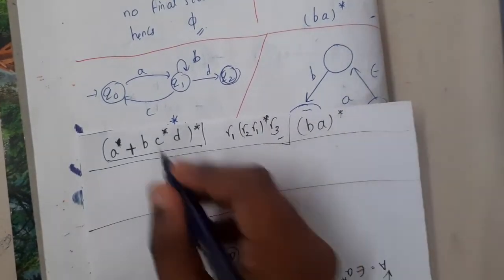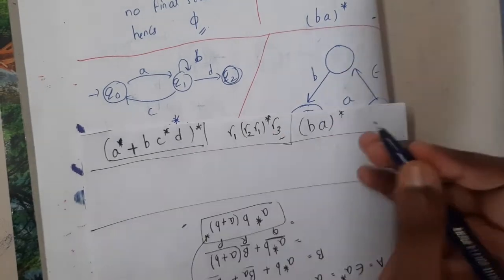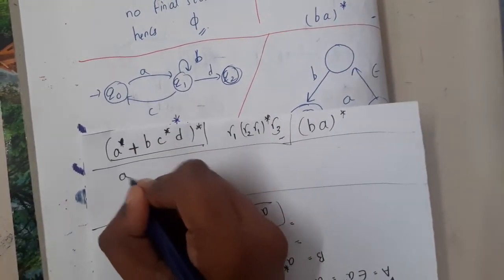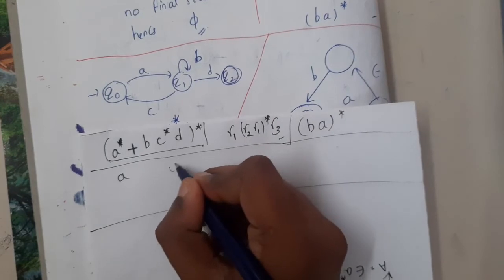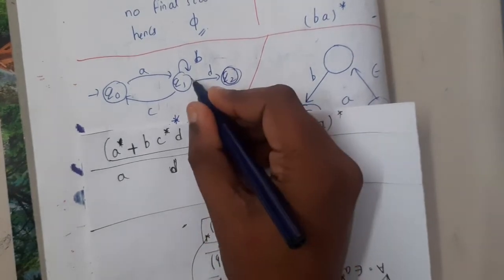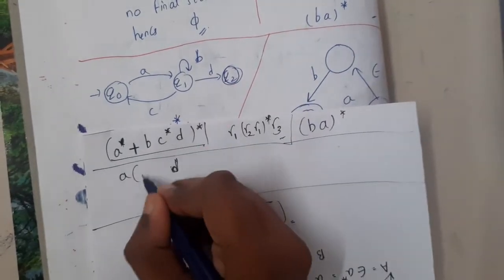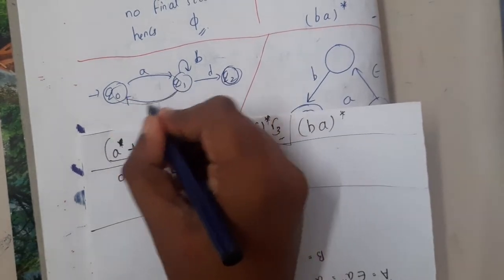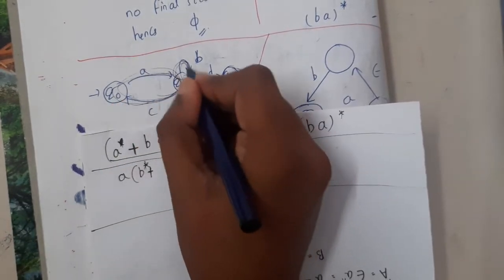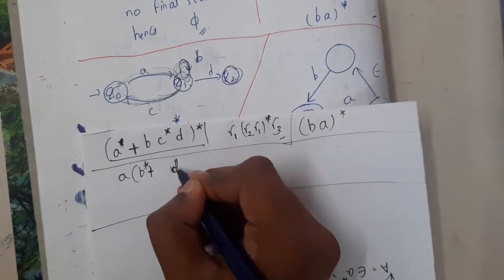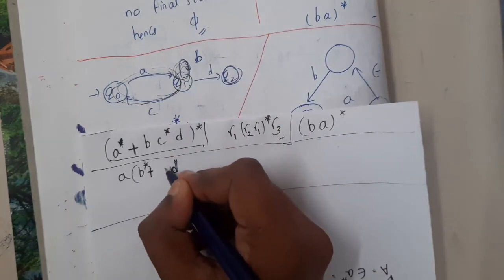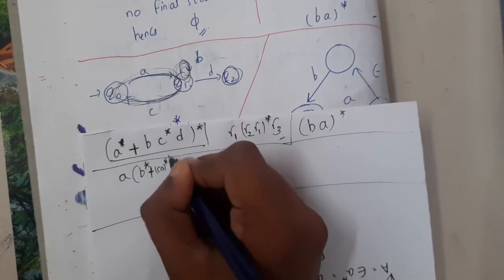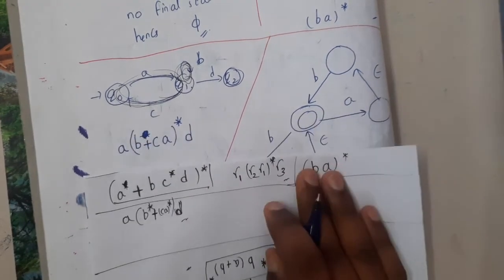Moving on to the next question: one 'a' is mandatory first. After that, the end needs a mandatory 'd'. In between, I can have b* or I can roam via 'ca' — so that gives (ca)* as a path option. The answer is a(b* + (ca)*)d, or more precisely using the interior loops, it can be written as a(b + ca)*d.